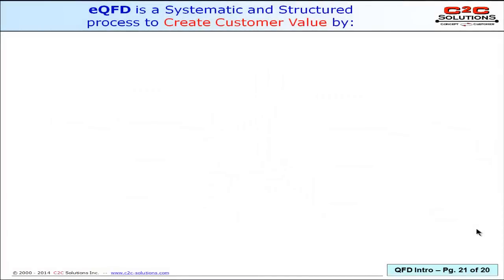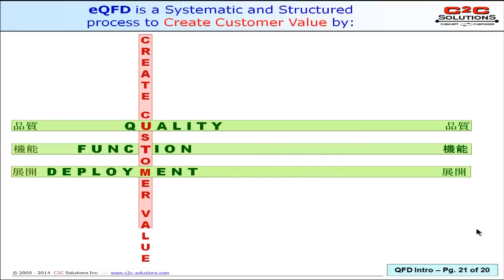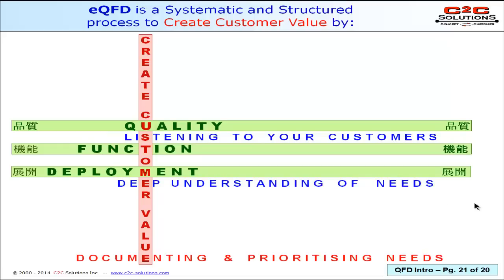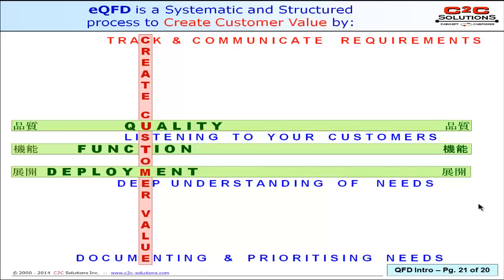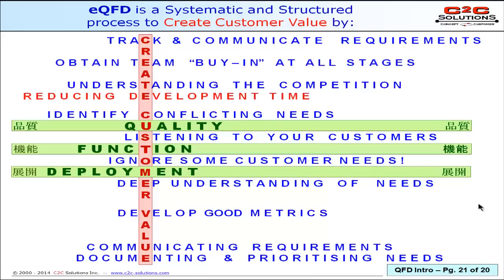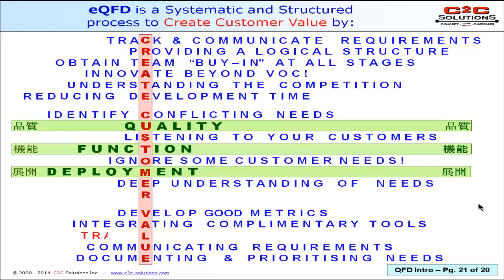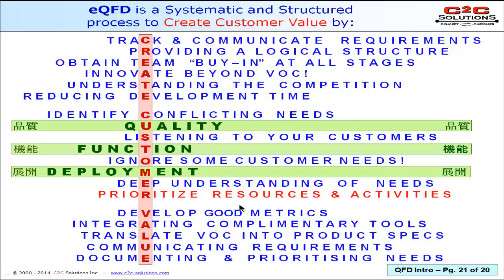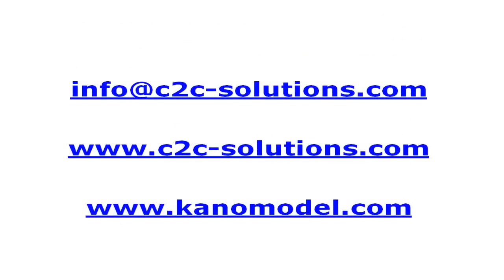To summarize: quality function deployment is all about creating customer value. That means listening to your customers, developing a deep understanding of their needs, documenting and prioritizing those needs, tracking and communicating requirements, understanding the competition, identifying conflicts, obtaining buy-in at all stages, reducing development time, providing a logical structure, integrating complementary tools, innovating beyond VOC, and translating VOC into product specs. That's your quick introduction to QFD. If you have any questions, you can forward them to info@c2c-solutions.com. Thanks for watching.